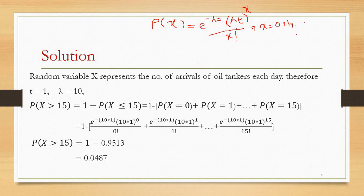We have to find this in an alternative way. As you know, P(X > 15) can be written as 1 minus P(X ≤ 15), since the total probability is 1. So we subtract P(X ≤ 15) and the remaining is P(X > 15). This equals 1 minus [P(X=0) + P(X=1) + ... + P(X=15)].